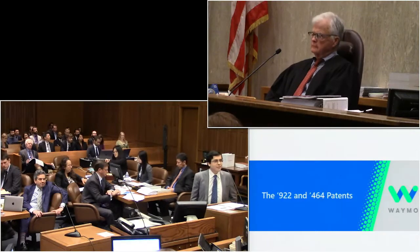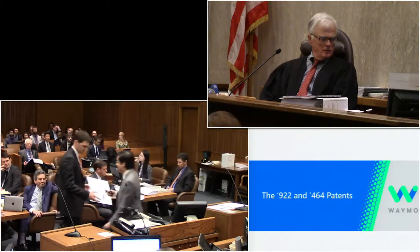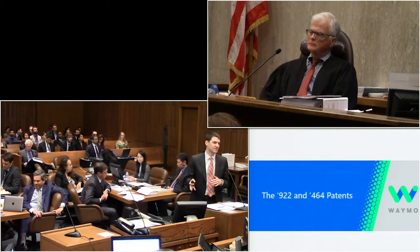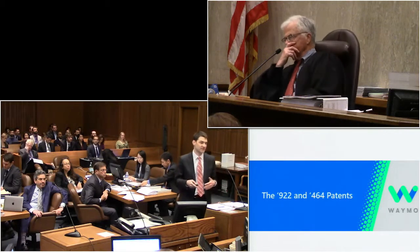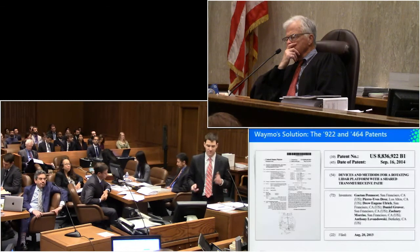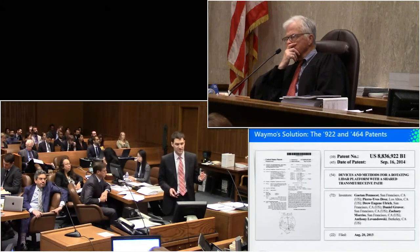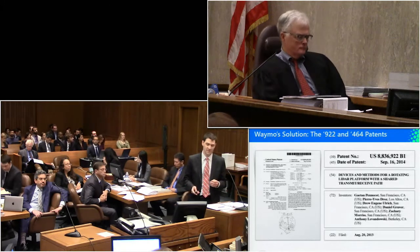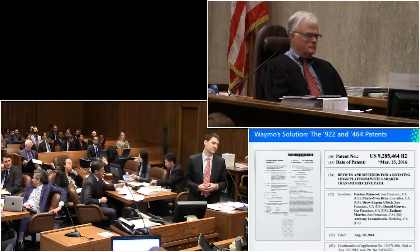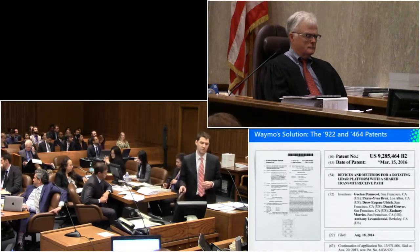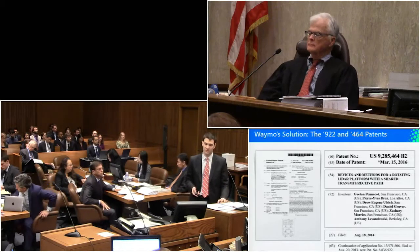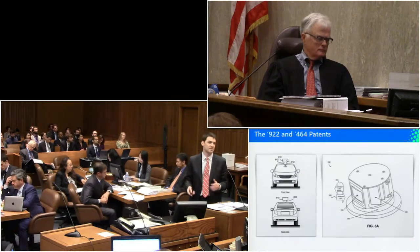I'm going to speak about the two patents asserted in the preliminary injunction motion, going through the example and the specification. The 922 patent was filed in 2013 and issued in 2014. The 464 patent is a continuation of the 922 patent, so the specifications between the two are identical. I'll refer to the 922 patent, but with the caveat that the specification is the same for the 464.